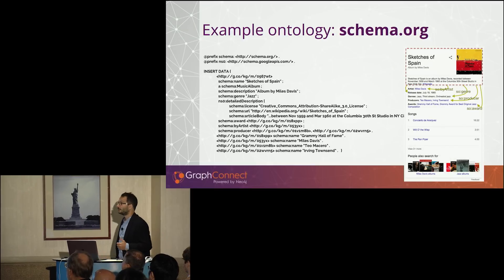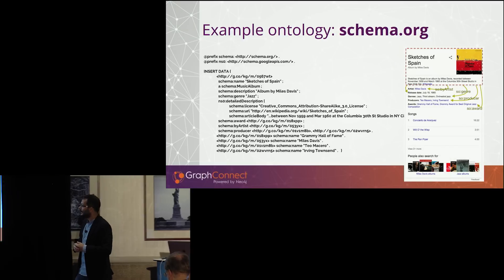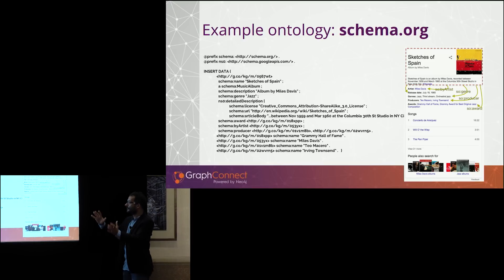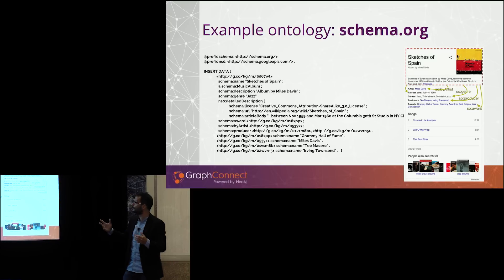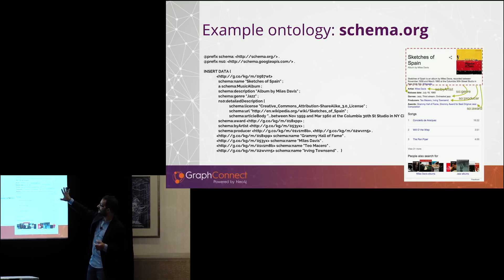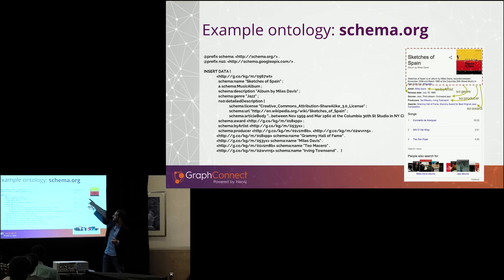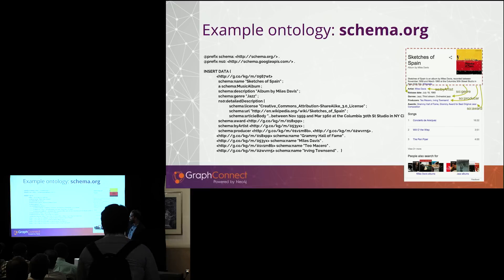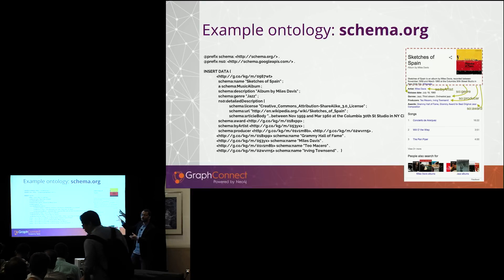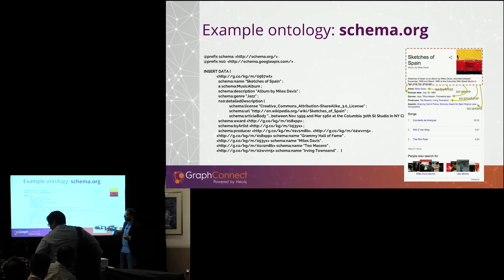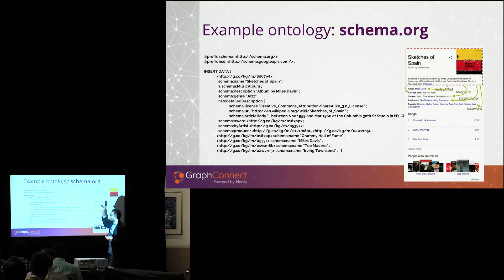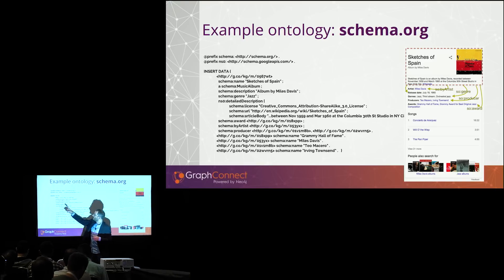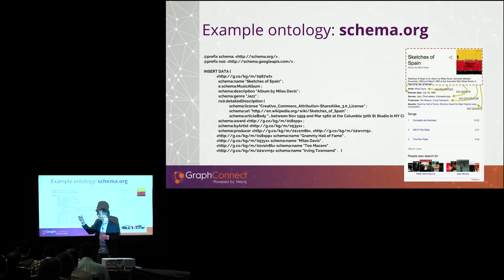Another good example is schema.org. You're all familiar with Google's knowledge graph — when you do a search, on the right-hand side if there's a match with a concept, you see a description. This is a human-readable version. If you search for an album by Miles Davis, you see the title, description, artist — a number of elements described according to the schema.org ontology. It's content annotated according to that particular ontology: this is an album, it has a name, description, genre, and is connected to an artist and other elements.